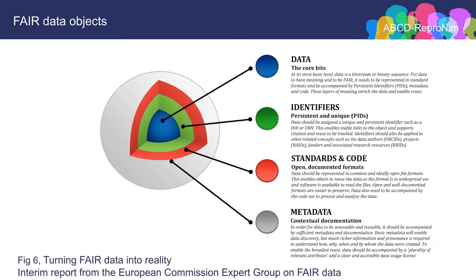Just to summarize, this is a nice picture of what is called a FAIR data object. It can be data, vocabulary, data about people, or any type of digital object. Basically you have the core bits — the digital object itself — you have identifiers that wrap these, standards and code that can be used to operate on them because they're made in a standards-compliant way, and then lots and lots of metadata — both rich and other types of contextual, the plurality of relevant attributes — associated with it to make these usable. This is considered a FAIR data object.